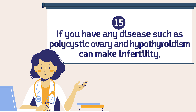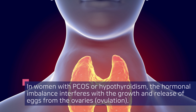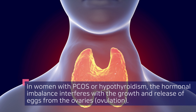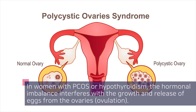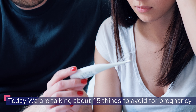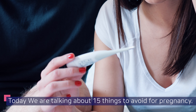Fifteen: if you have any disease such as polycystic ovary syndrome or hypothyroidism, it can cause infertility. In women with PCOS or hypothyroidism, the hormonal imbalance interferes with the growth and release of eggs from the ovaries, affecting fertility. Today we talked about 15 things to avoid for pregnancy.